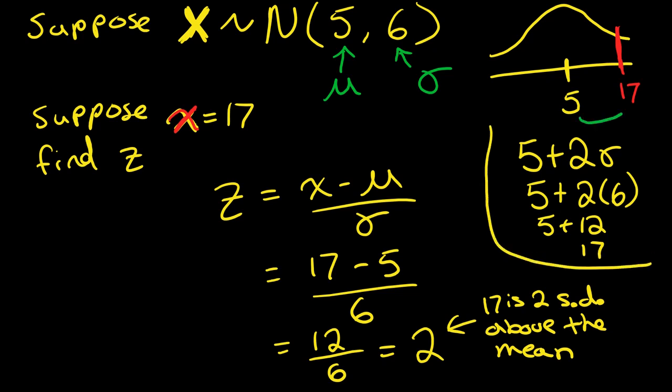So if I were to basically go 2 standard deviations, 2 sigma, above the mean - I'm adding 2 standard deviations above the mean - then I'll get that 17, that observation of 17. So what is z? Z is the number of standard deviations you are from the mean.